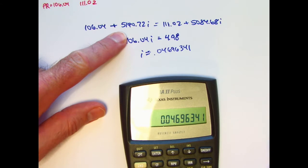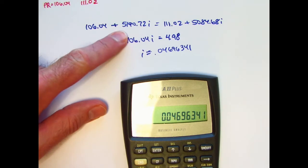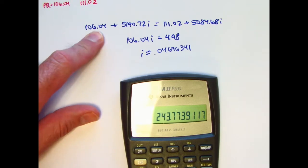Let's plug it in. I'll plug it into both just to see if we get the same thing. So let me go ahead and store that in register zero. I times, first of all, 5190.72 plus 106.04.